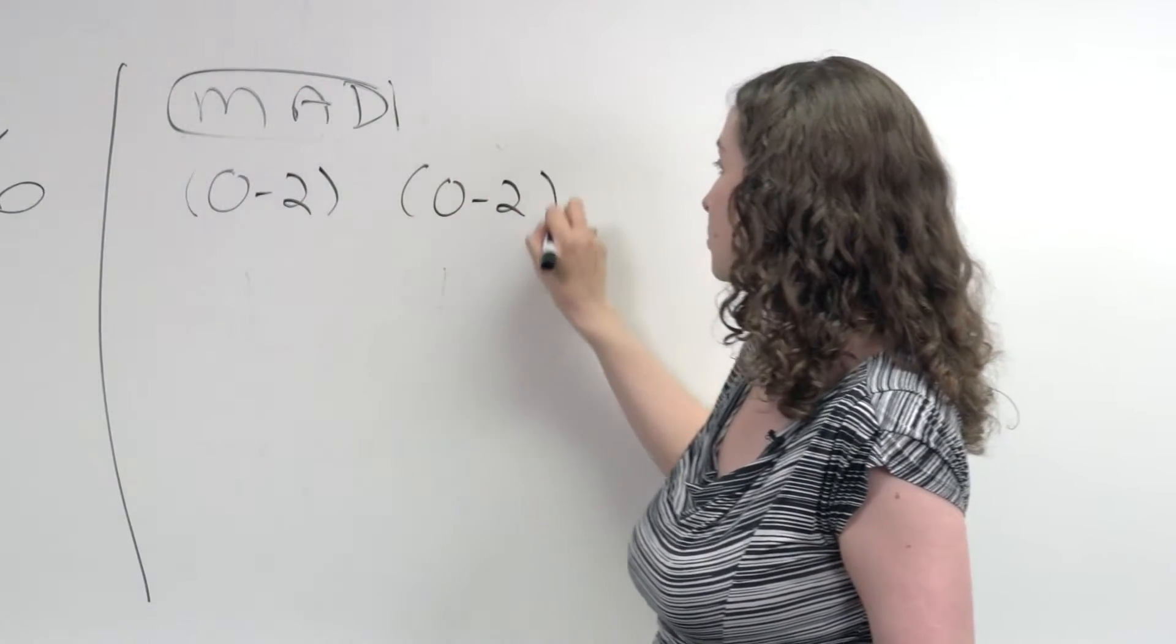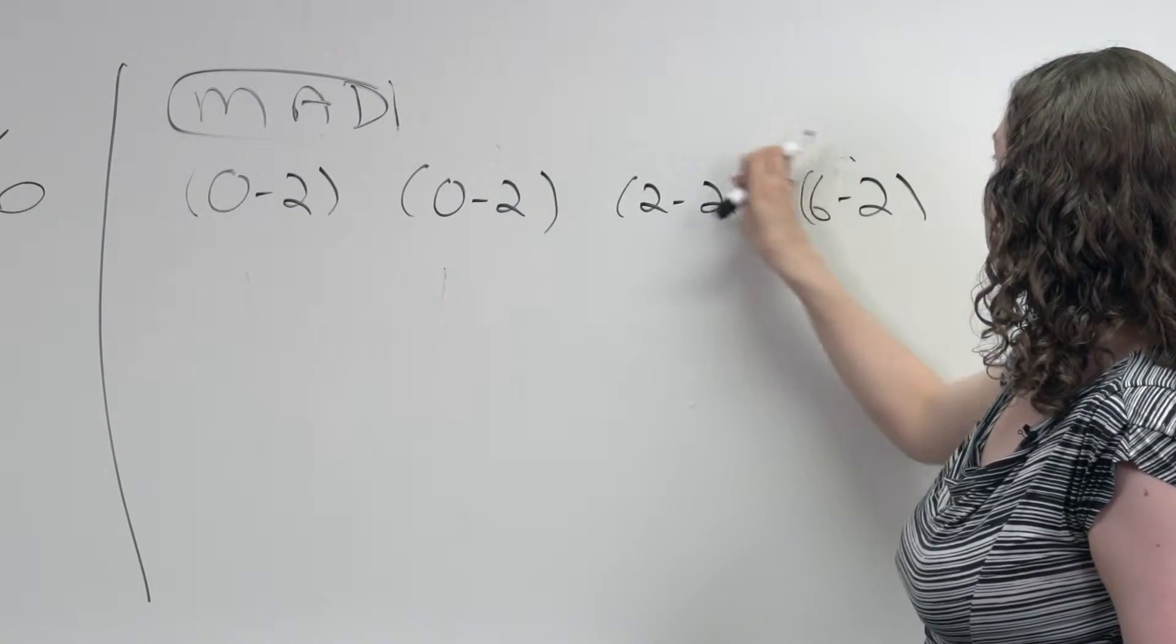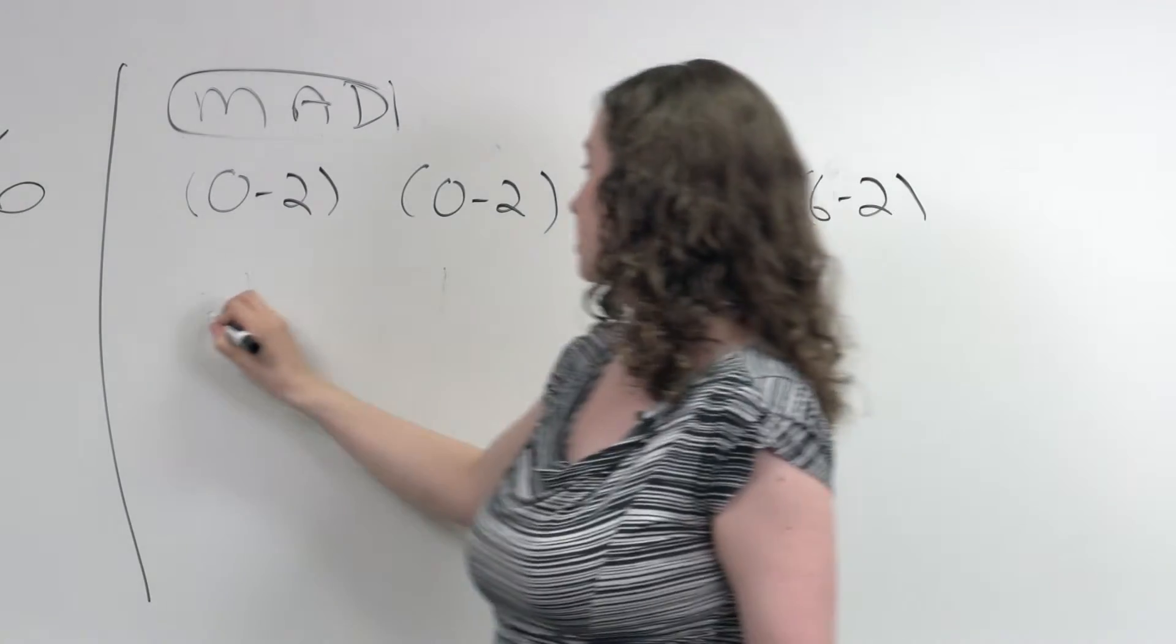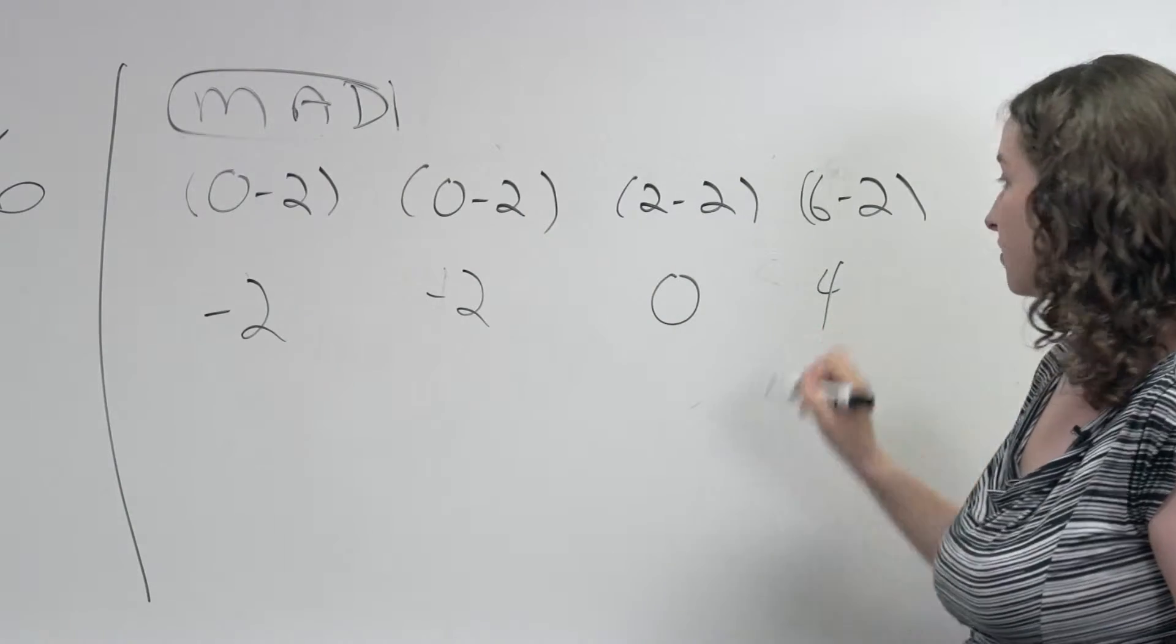So I've got 0 minus 2, 0 minus 2, 2 minus 2, and 6 minus 2. So this difference is negative 2, this difference is negative 2, this difference is 0, and this difference is 4.